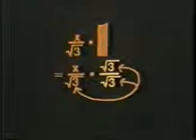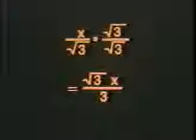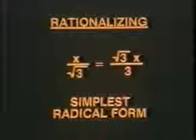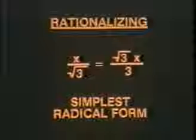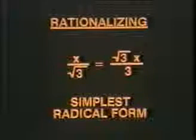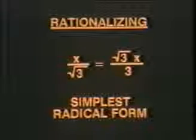So let's do it, but let's use a special kind of one. We'll make it by putting the radical we want to move on both top and bottom — it's still the same as one, but it lets us do some multiplying. And look what we get: on top, we get the square root of 3 times x. But on the bottom, the square root of 3 times itself is equal to 3, and we've done it. We've removed the radical in the denominator and replaced it with a rational number. This process is called rationalizing the denominator of a fraction. Once it's been simplified like this and has no radical remaining in the denominator, a fraction is said to be in its simplest radical form.